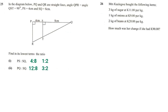Okay, now let's go to question 26. Question 26 is, Mrs. Kalingwe bought the following items: 3 kg of sugar at 11 kwacha per kg, 1 kg of onion at 9 kwacha per kg, 2 kg of beans at 20 kwacha per kg. Then the question is, how much was her change if she had 90 kwacha? Okay, so Mrs. Kalingwe had 90 kwacha and she bought these items. So let's find how much she spent before we look for how much the change was.